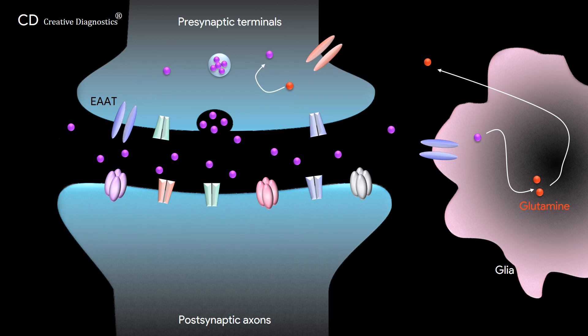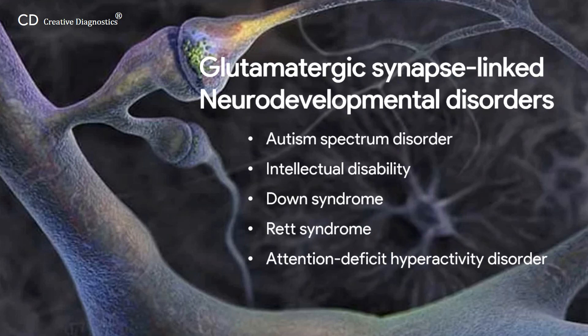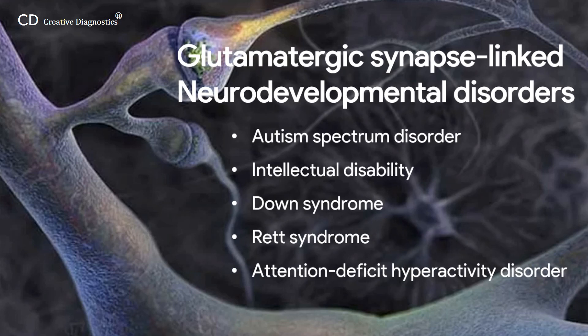The glutamatergic synapse pathways play a crucial role in a large array of normal physiological functions. Glutamate dysfunction stands out as a key factor in both injury and neurodevelopmental diseases, including Autism Spectrum Disorder, Intellectual Disability, Down Syndrome, Rett Syndrome, and Attention Deficit Hyperactivity Disorder.